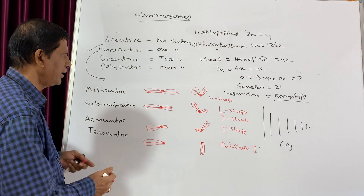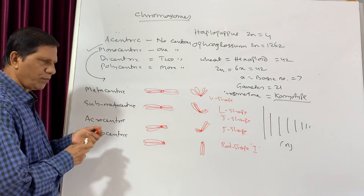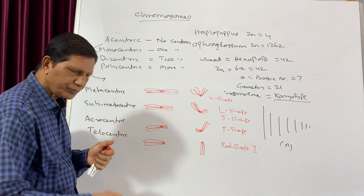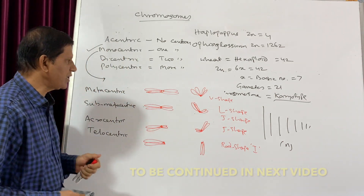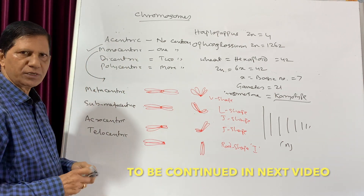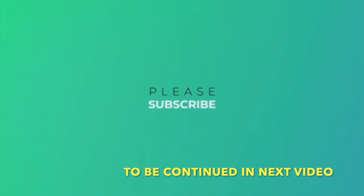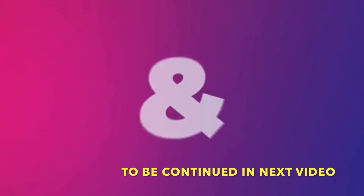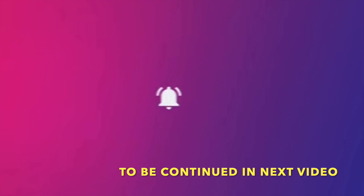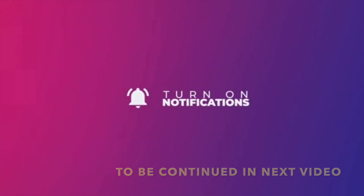So this is about the shape of the chromosomes. The next thing we will discuss is the morphology of a chromosome.